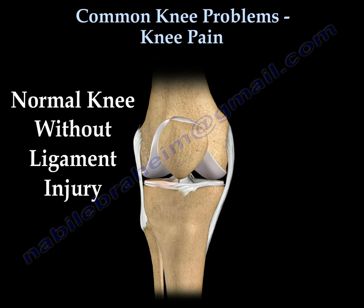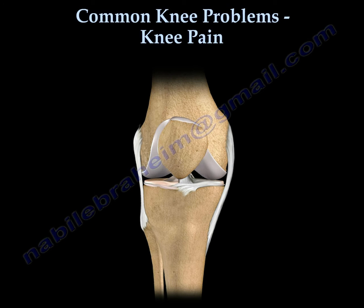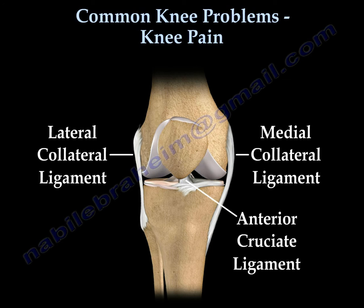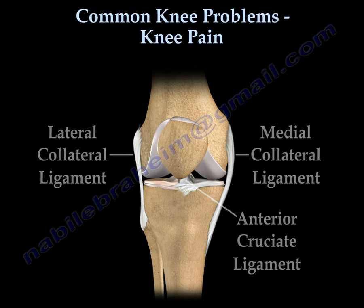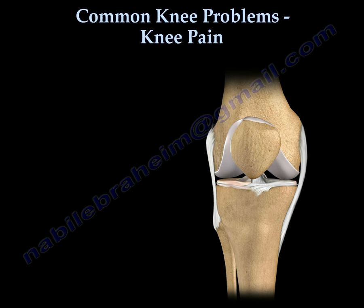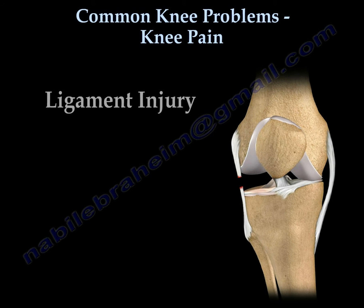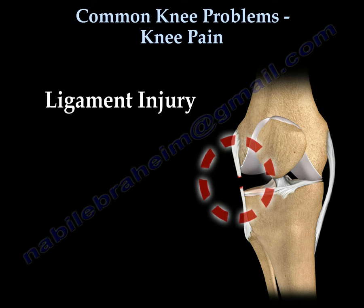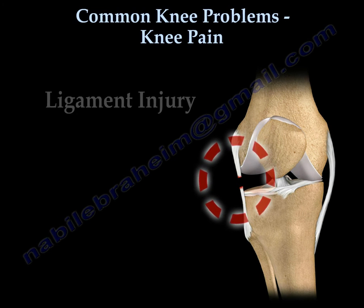This is a normal knee without ligament injury. You can see the medial and lateral collateral ligament and the ACL in the middle of the knee. This is an example of a knee injury — you can see the lateral collateral ligament is injured.